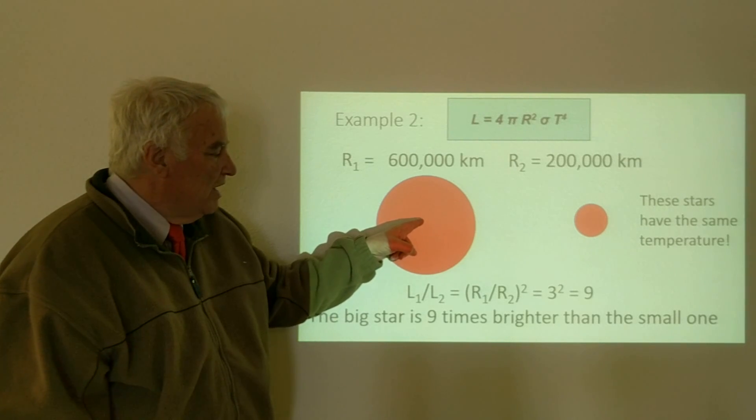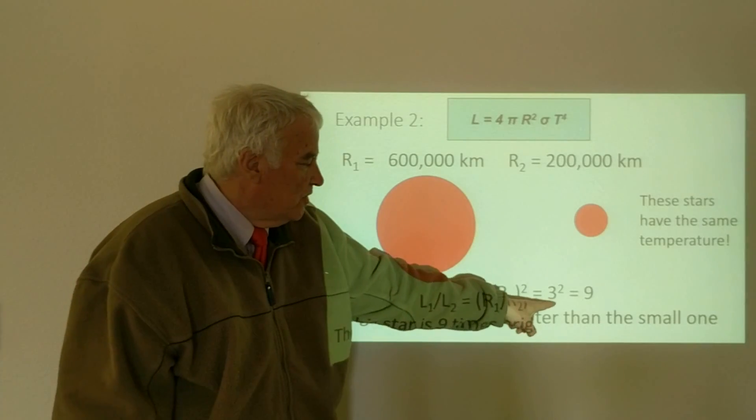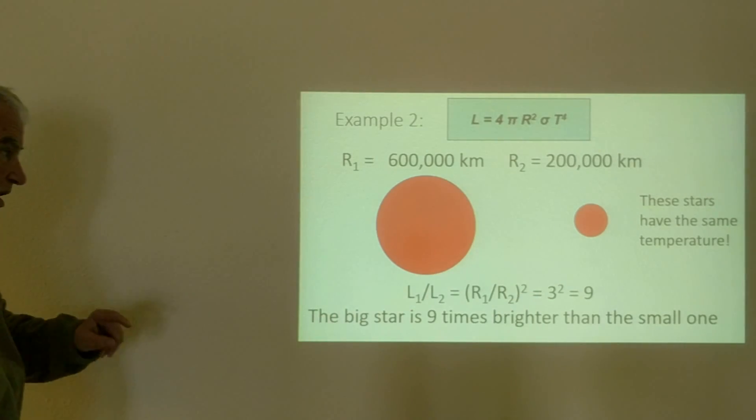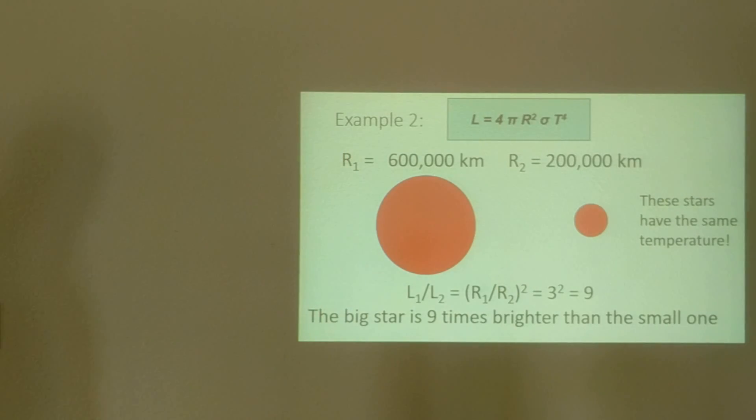And this will go as the square of the ratio of the radii. Radius 1 over radius 2 is 3; 3² is 9. So this big star is 9 times brighter than the small one.